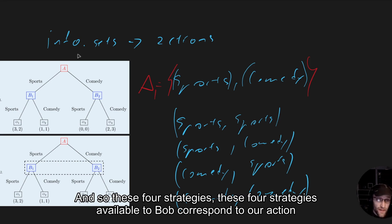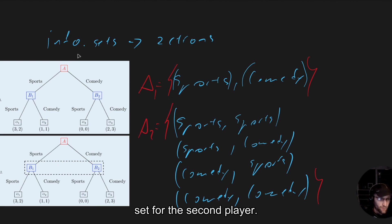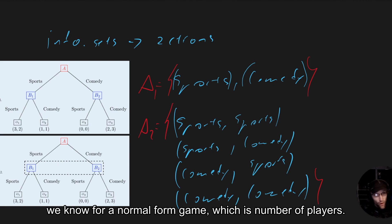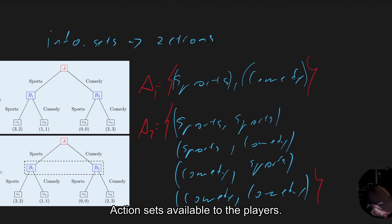So these four strategies, these four strategies available to Bob correspond to our action set for the second player in the extensive form, the normal form game. I'm about to write down because now we can use the definition we know for a normal form game, which is number of players. We've got two of them.